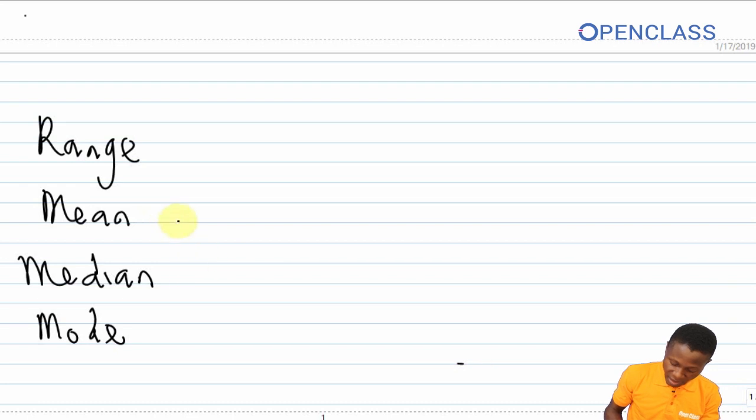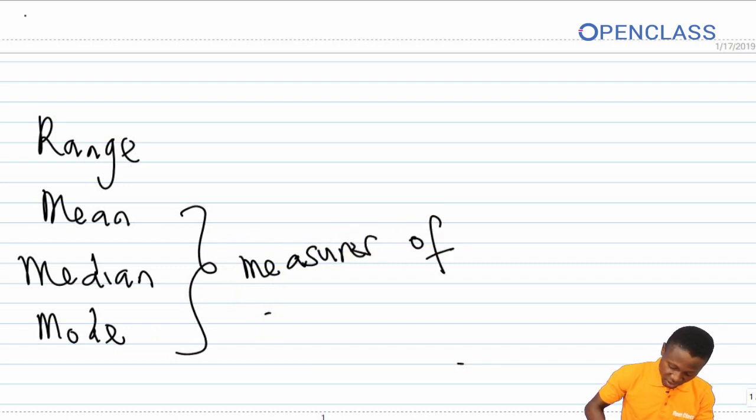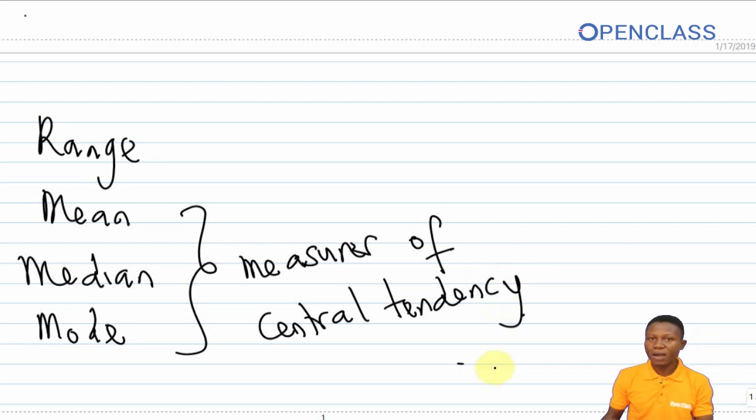These are called measures of central tendency. Another word for measures of central tendency is measures of averages or measures of location. The mean, the median, and the mode gives us an idea of the average or the middle value in a set of data.